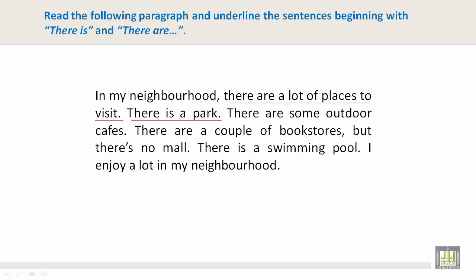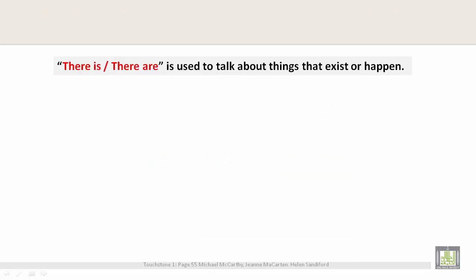Now let's look at all of the sentences containing there is and there are. Please pause your screen and take a look. There is and there are is used to talk about things that exist or happen.